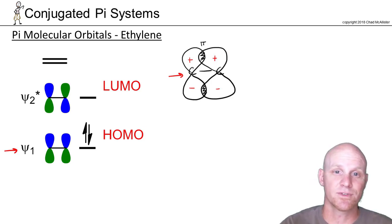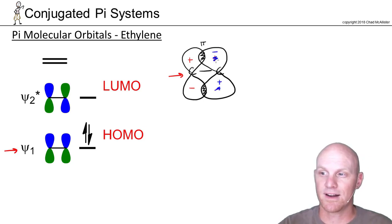Whereas destructive overlap, so in this case, let's just say instead this went the other way around, plus here, minus here. Now I've got a positive lobe interacting with a negative lobe. And right where they overlap here, they would cancel each other out. And it would create what's called a node.